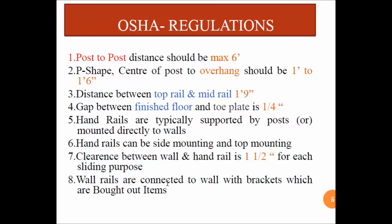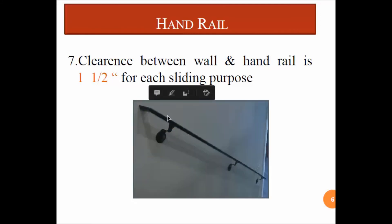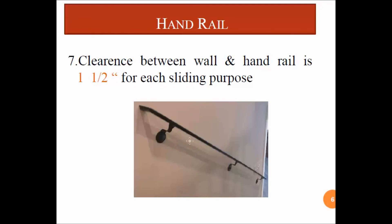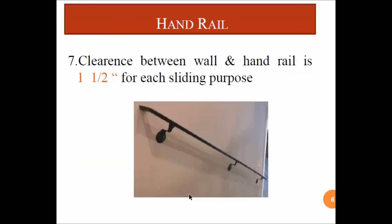Wall rails are connected to walls with brackets, which are bought-out items. The clearance between the wall and the handrail is one and a half inches for sliding purposes, so that the hand can move more easily. These brackets are bought-out items that we can bring from the shop.